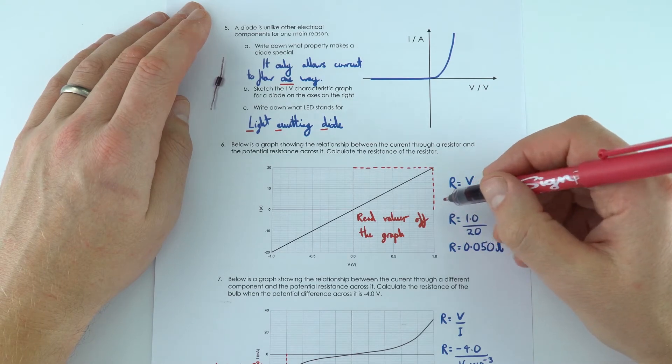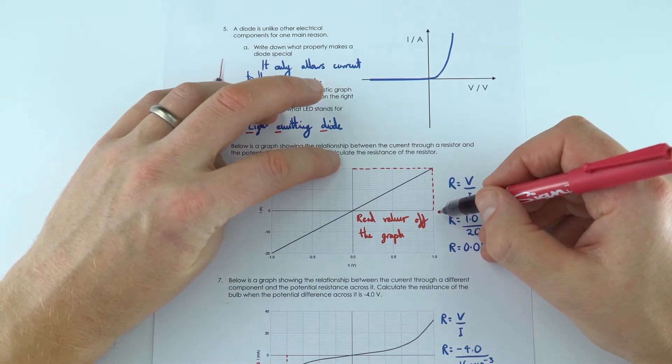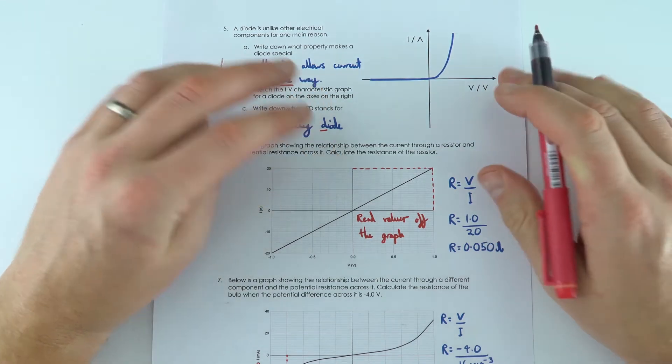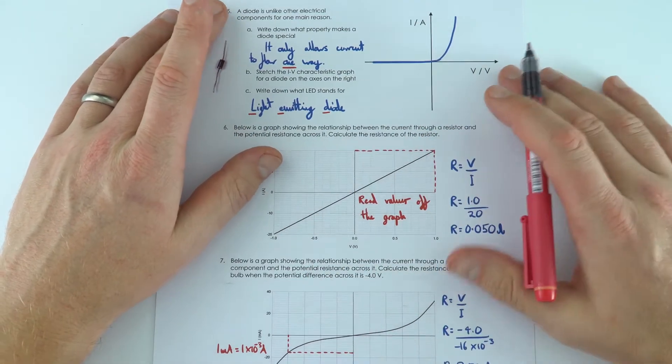So we've got one, which is the potential difference, divided by 20, which was the current to find that the resistance was 0.050 ohms. So that's going to be the same anywhere for that resistor.